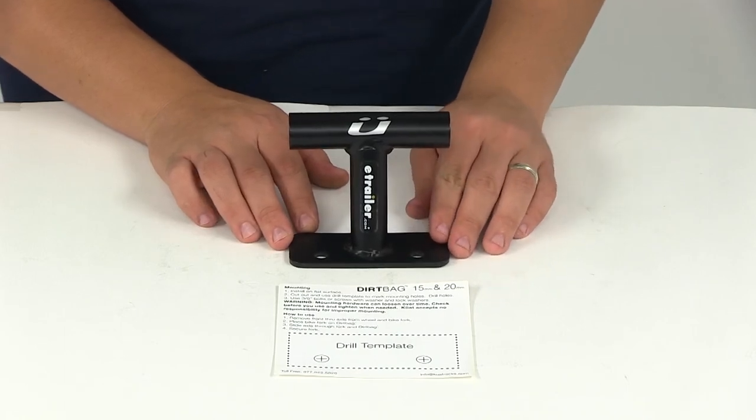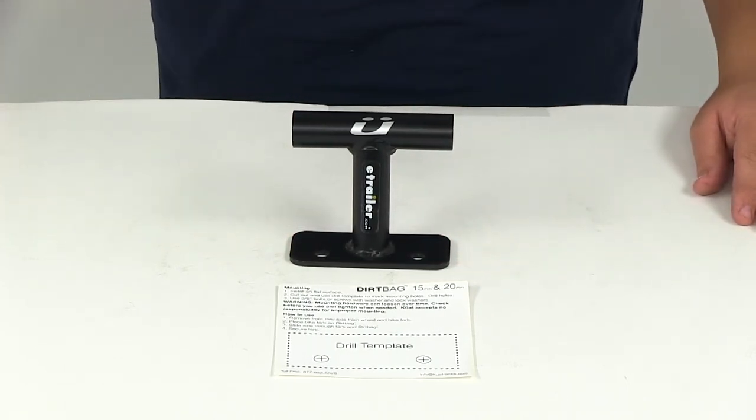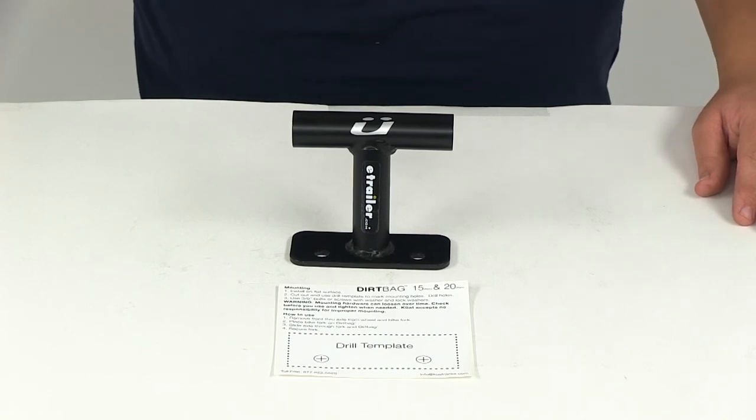This has a carrying capacity of one bicycle. That's it for today's review of part number DRT20, the Kuat Dirtbag Bike Rack.